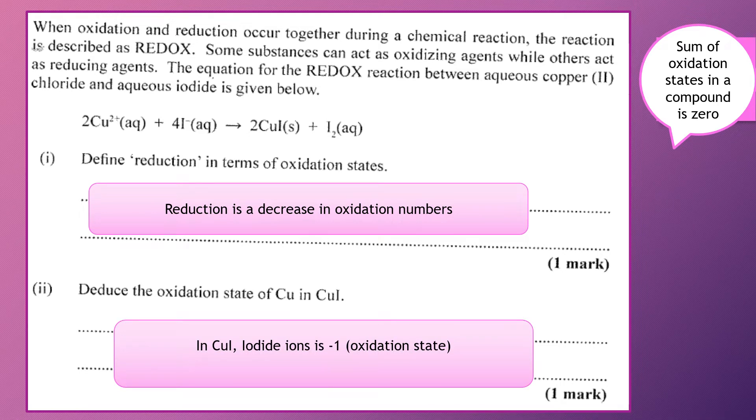So if everything must add up to give me zero and iodide is minus one, what would be the oxidation state for copper?